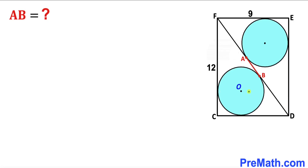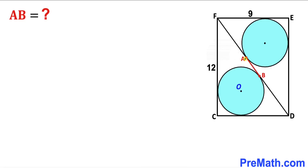In this video we have two identical circles fully inscribed in a rectangle CDEF, such that the circles are tangent to the diagonal FD at points A and B. The dimensions of rectangle CDEF are given as 9 and 12 respectively. Our task is to calculate the length AB.